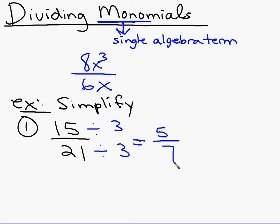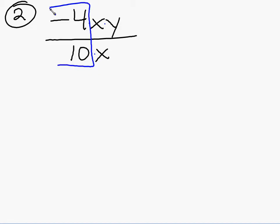We can do the same thing with monomials or algebra expressions. If I had negative 4xy over 10x, we do it exactly the same way. First thing I want you to notice is that 4xy means 4 times x times y, and 10x means 10 times x. When there is a product on the top and bottom, we can just simplify any way we want to.